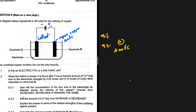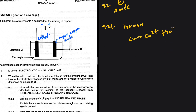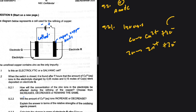Question 9.2.1: How will the concentration of zinc ions in the electrolyte be affected during the refining of copper? The answer is that it increases. The concentration of zinc ions increases because at the anode, where we have the impure copper, two oxidation reactions take place: copper becomes copper 2+ plus two electrons, and zinc becomes zinc 2+ plus two electrons. But only copper 2+ goes to the cathode, so zinc 2+ remains in the electrolyte.